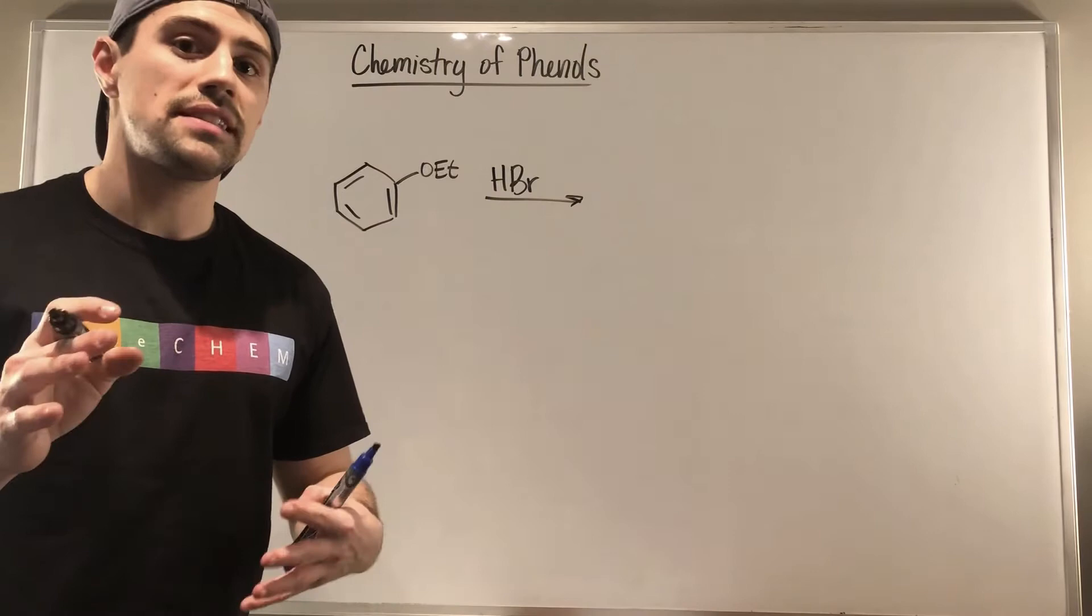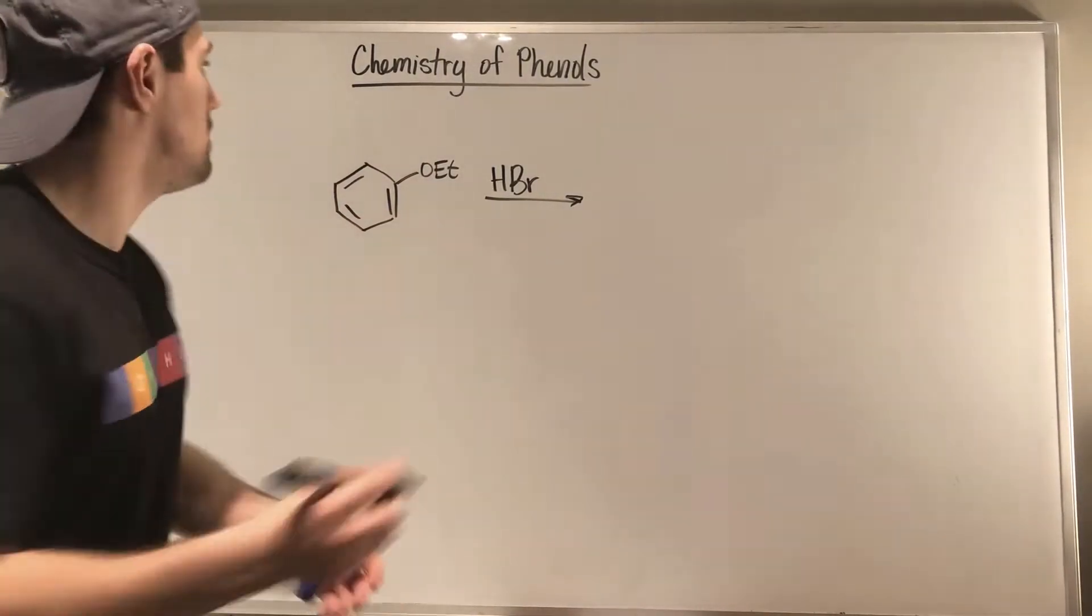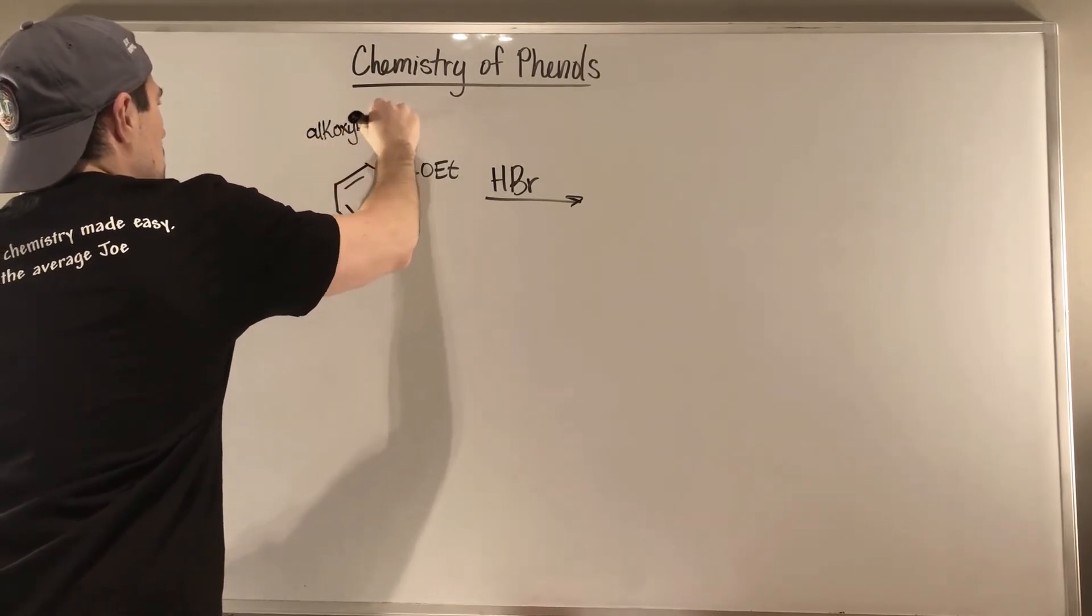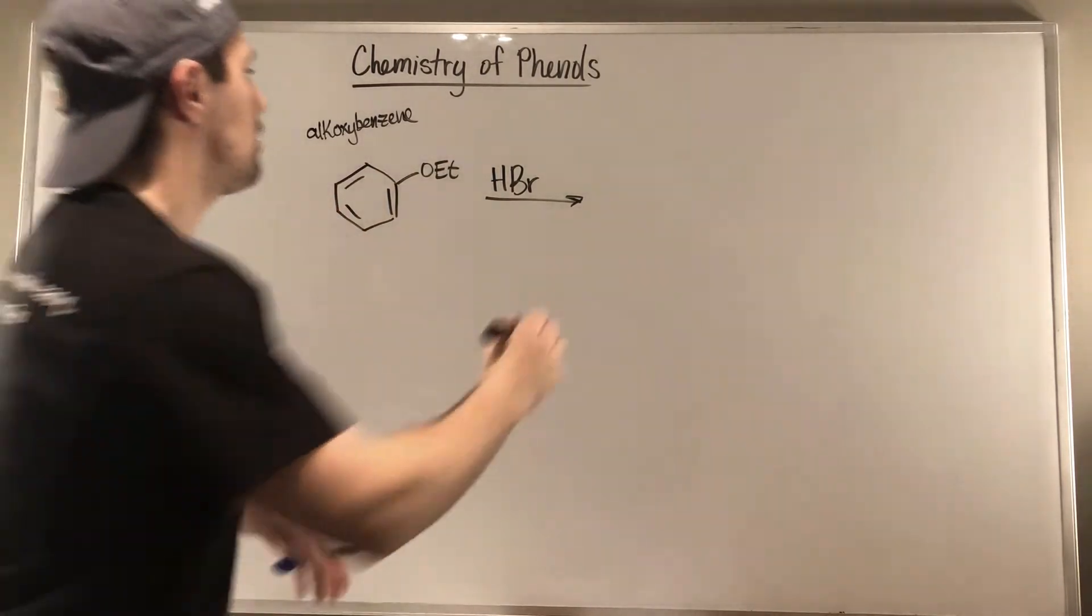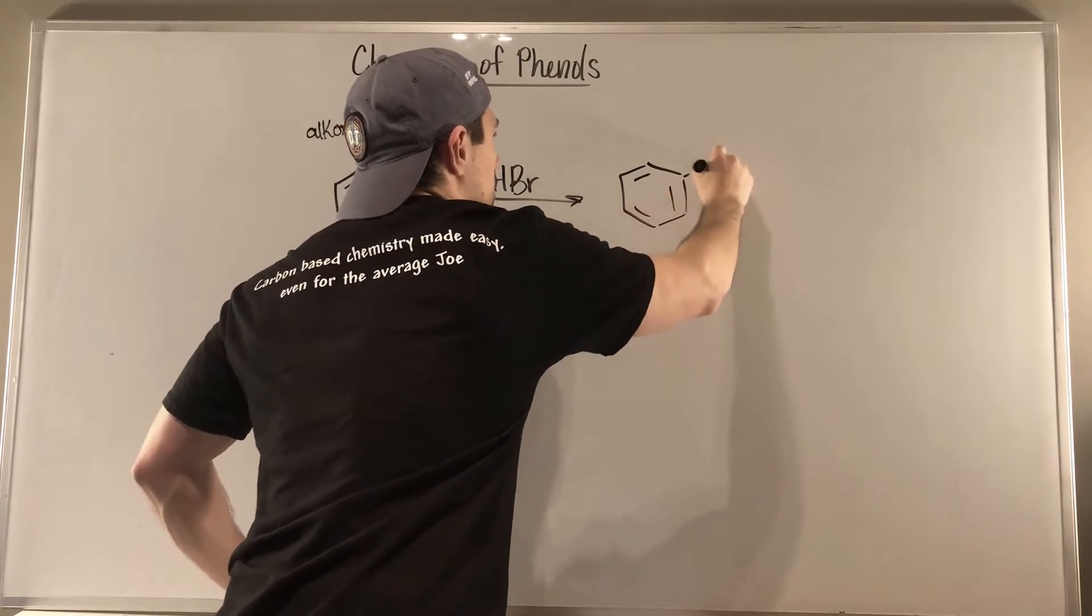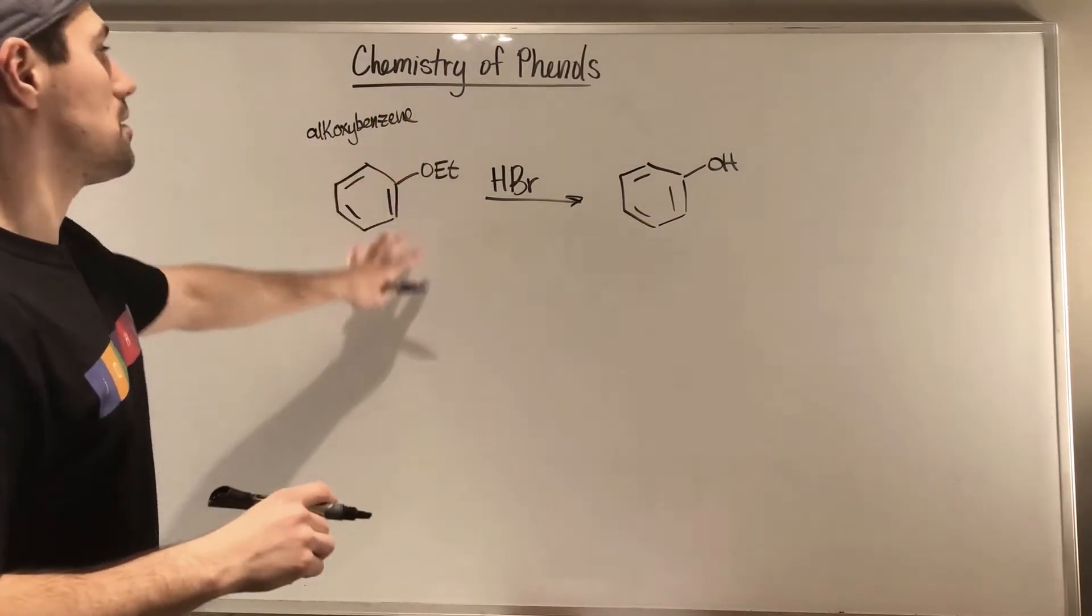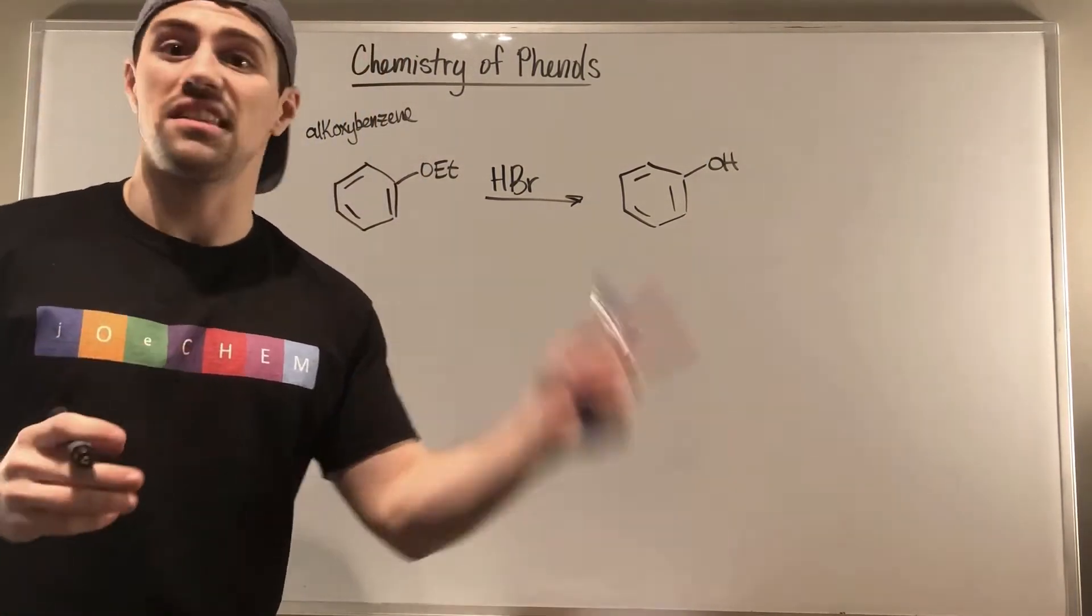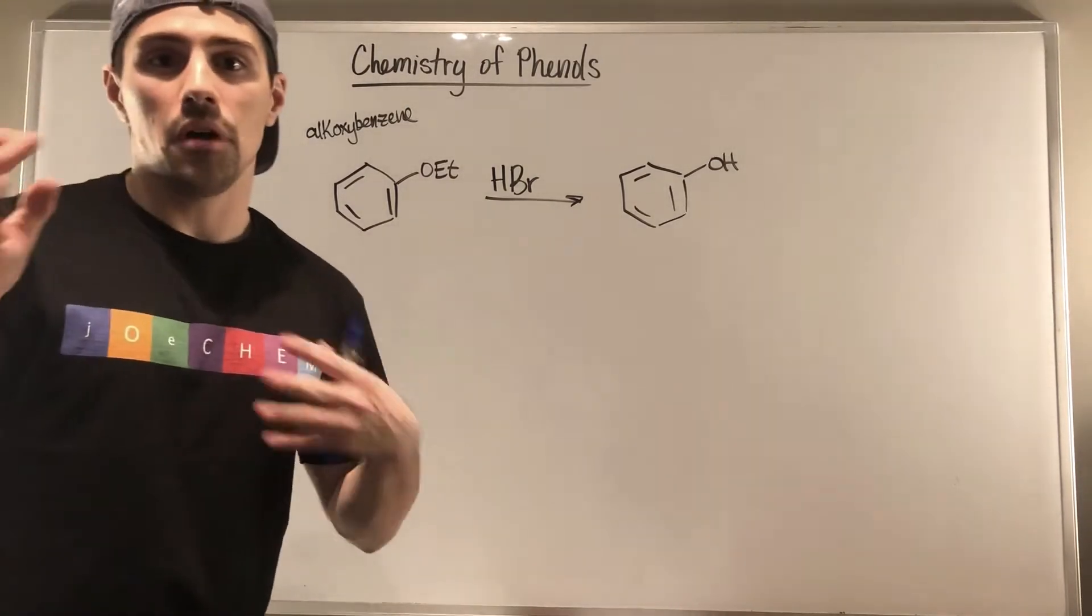Okay gang, so let's take a look and we can take something like this, which you can call an alkoxybenzene, right? Because we have an alkoxide attached to benzene and we can kind of use it to get back our phenols. So this will be basically how do we go from an alkoxybenzene to a phenol and then we'll do the ether, the Williamson ether synthesis, which is basically this but in reverse.